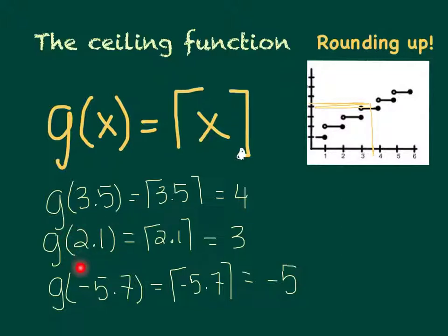So even a number like 2.1, which is really close to 2, the ceiling function would send that to 3. Negatives, again, are probably the hardest. So if we plug in negative 5.7, the ceiling function is going to send that up to negative 5, because we're looking for the integer that is bigger this time.